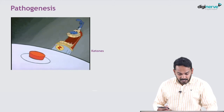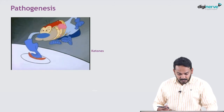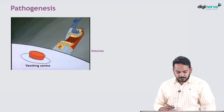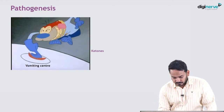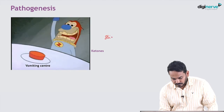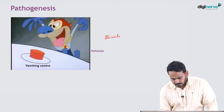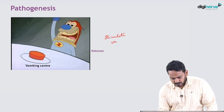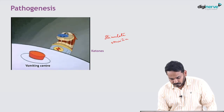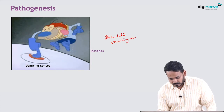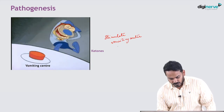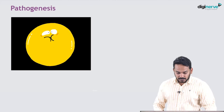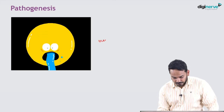The ketone bodies also stimulate the vomiting center, and this results in nausea and vomiting.